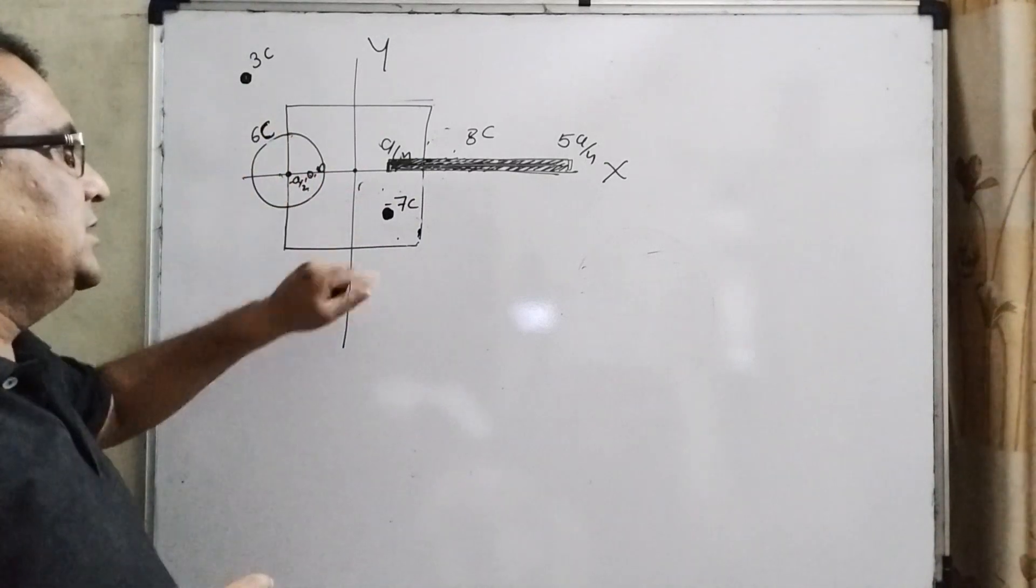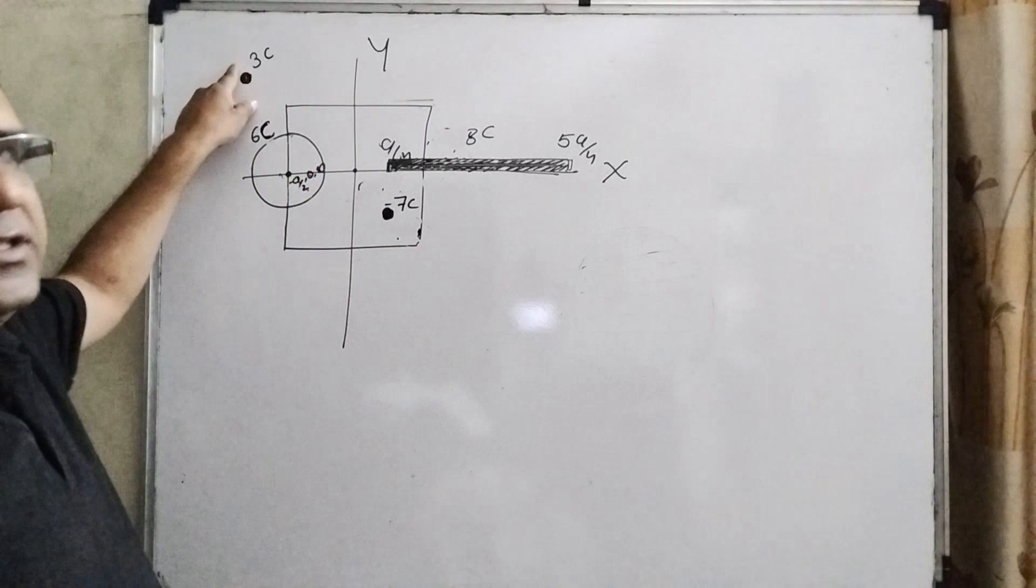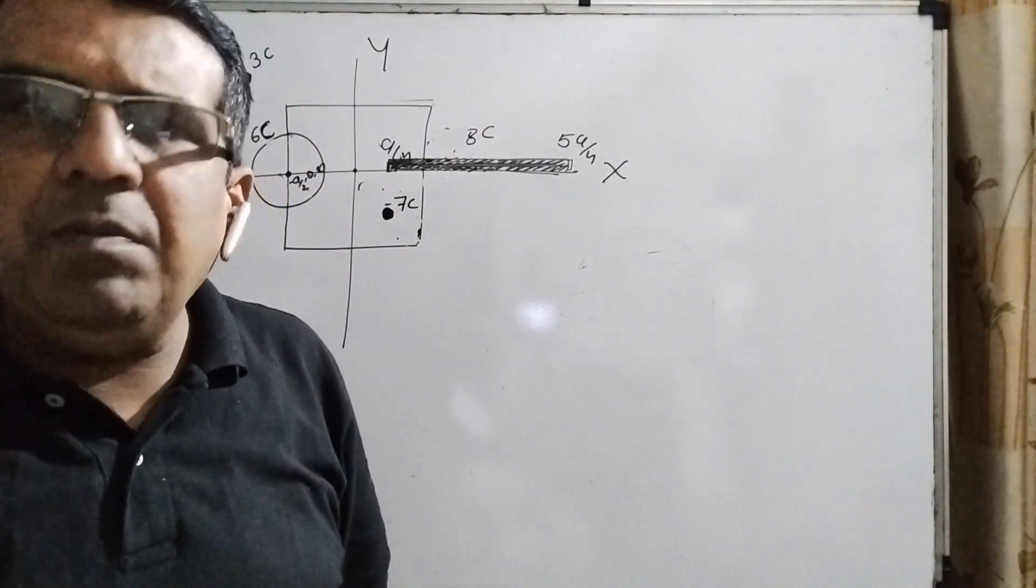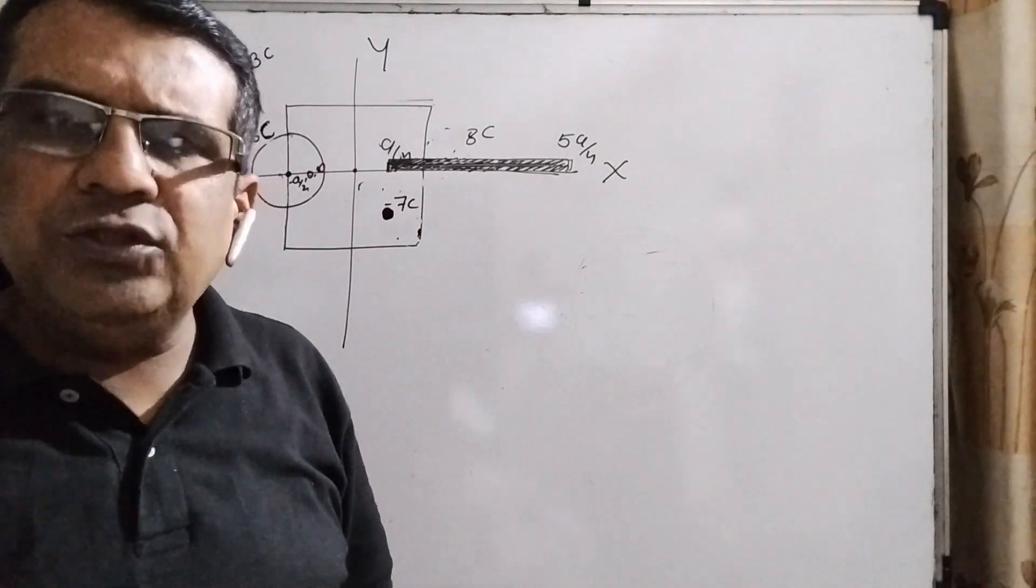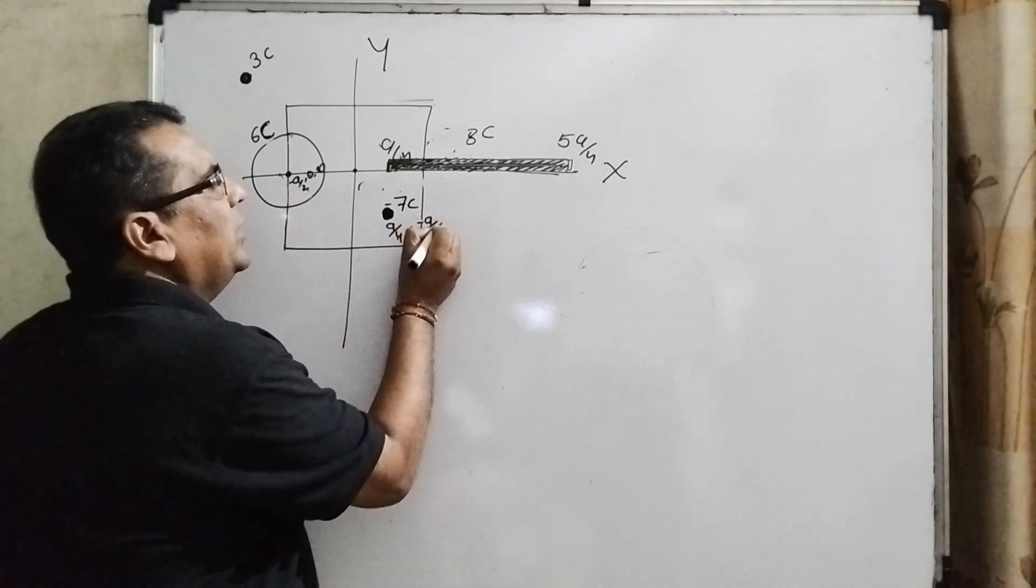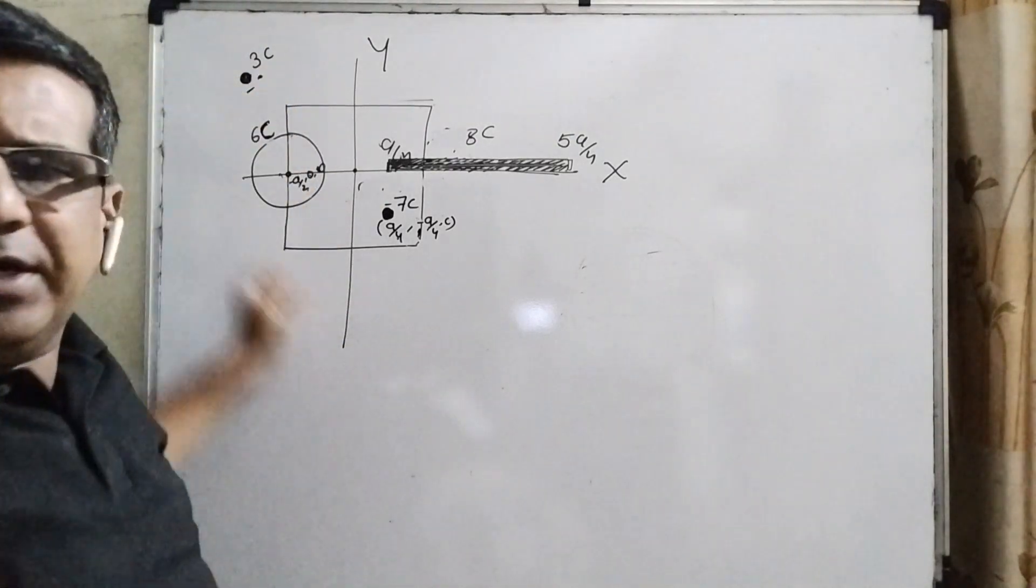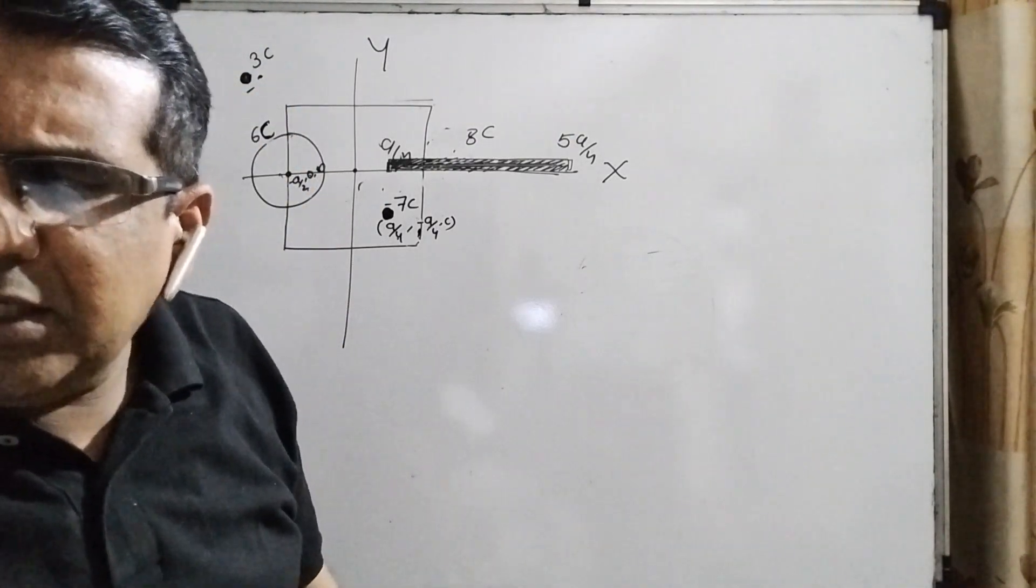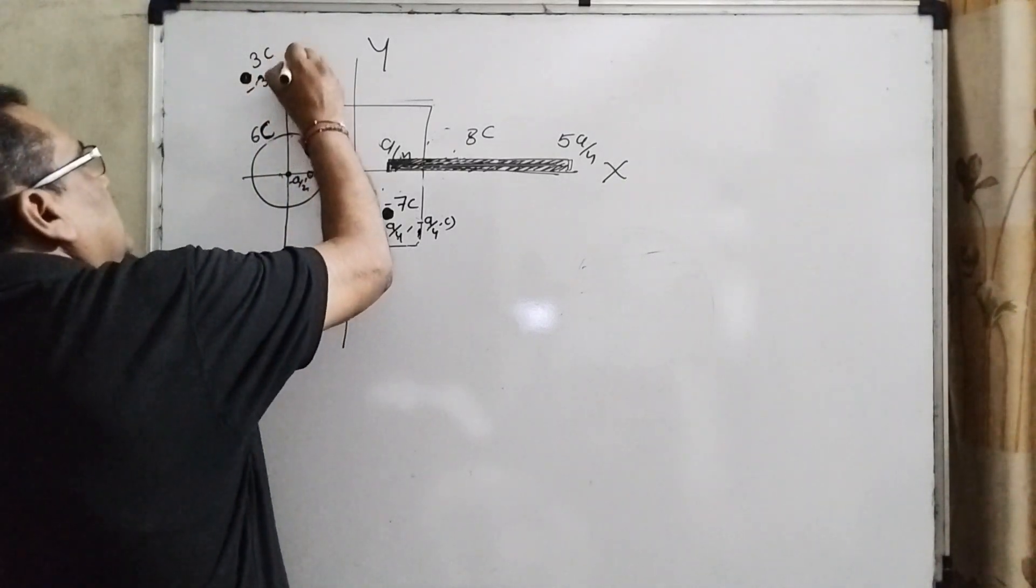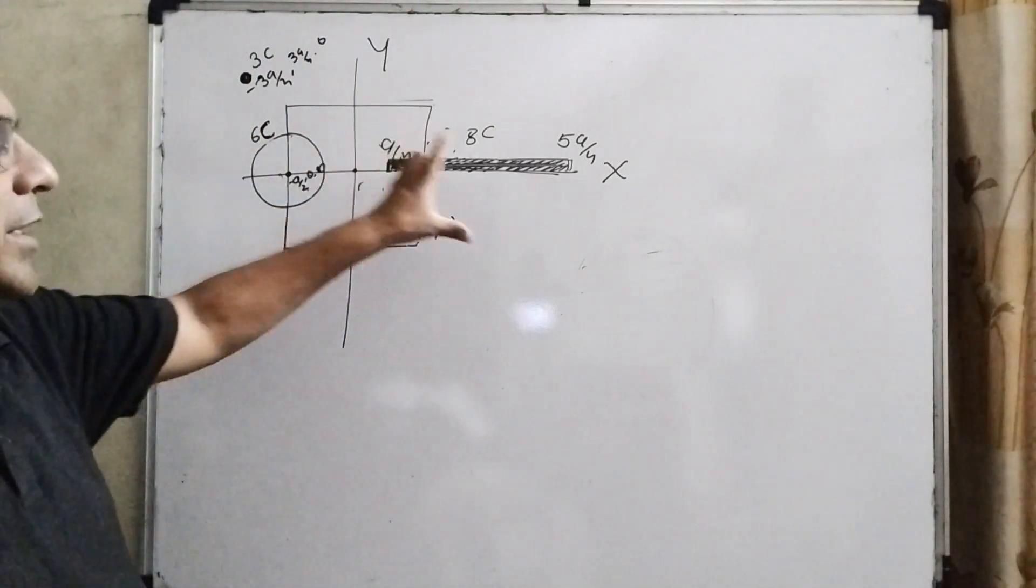And the two point charges are -7C and 3C. The location is given according to the question. a/4, -a/4, 0 means its coordinate is (a/4, -a/4, 0). And its coordinate is -3a/4, 3a/4, 0. Now, we have located all the points.